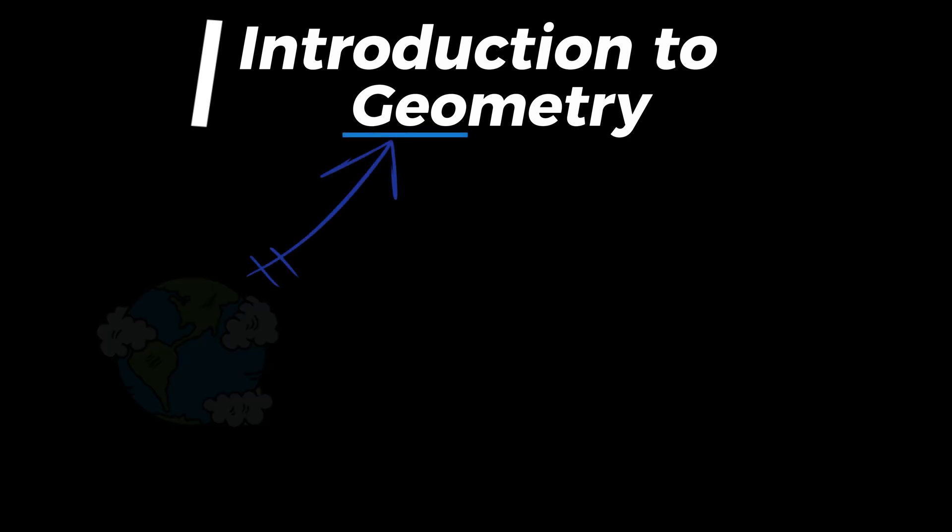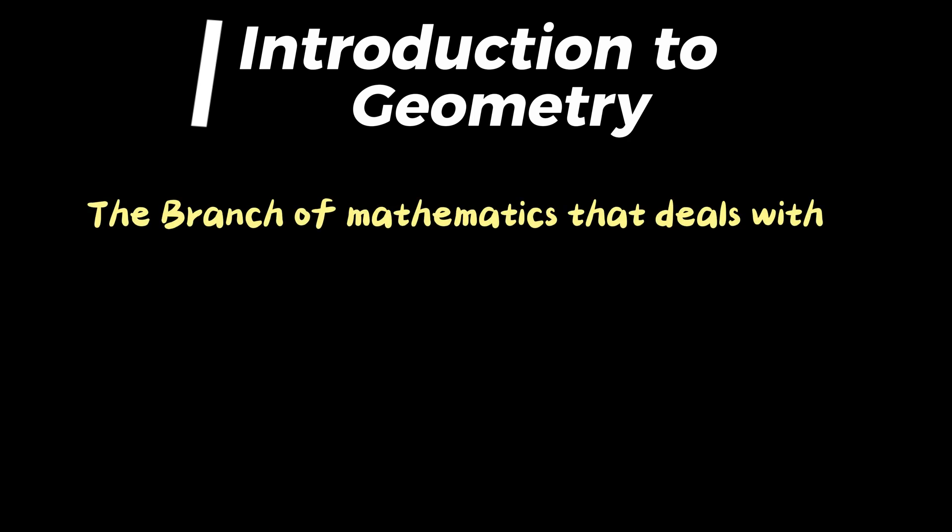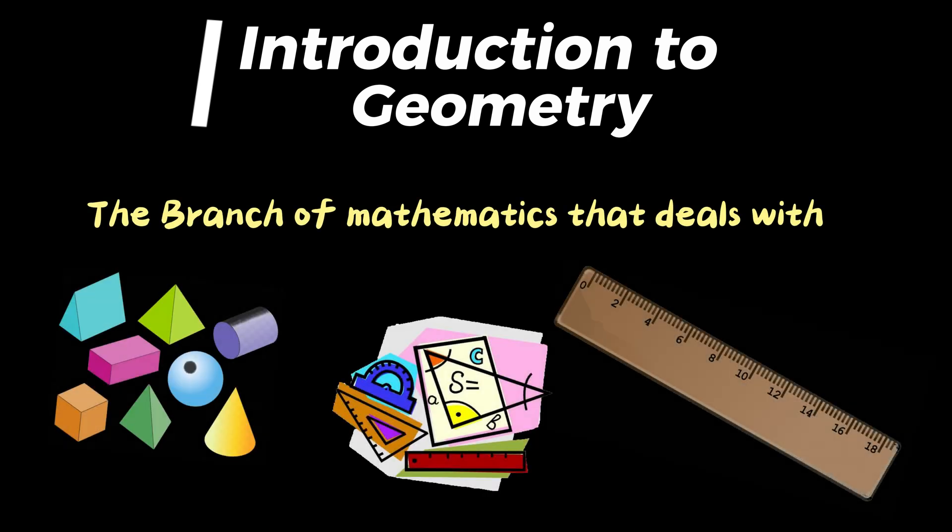In this video, we will understand some important and basic terms related to geometry. The word geometry is derived from the Greek word Geo, meaning Earth, and Metron, meaning measurement. It is a branch of mathematics that deals with the shape, angles, dimensions, and sizes of variety of things surrounding us.